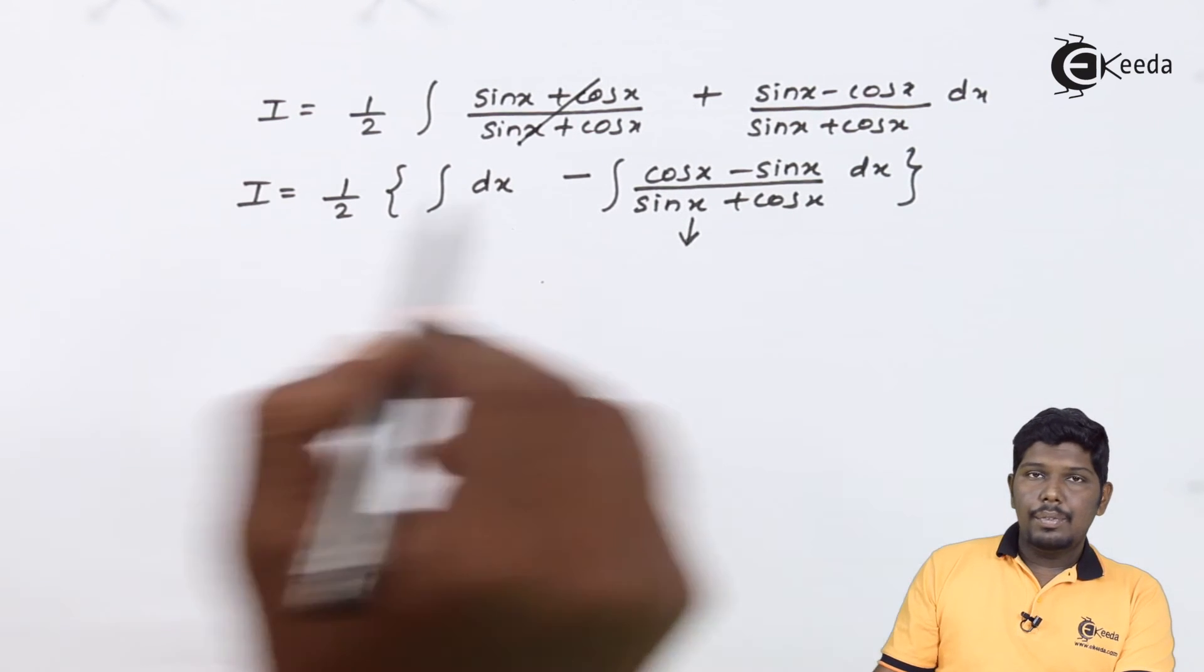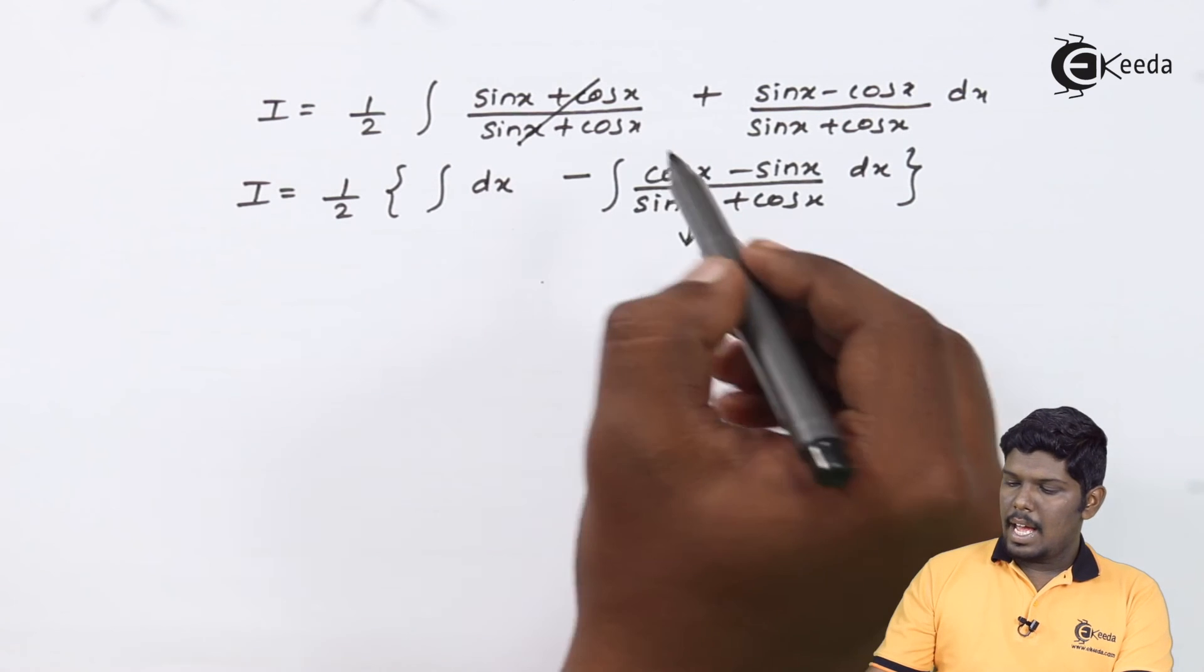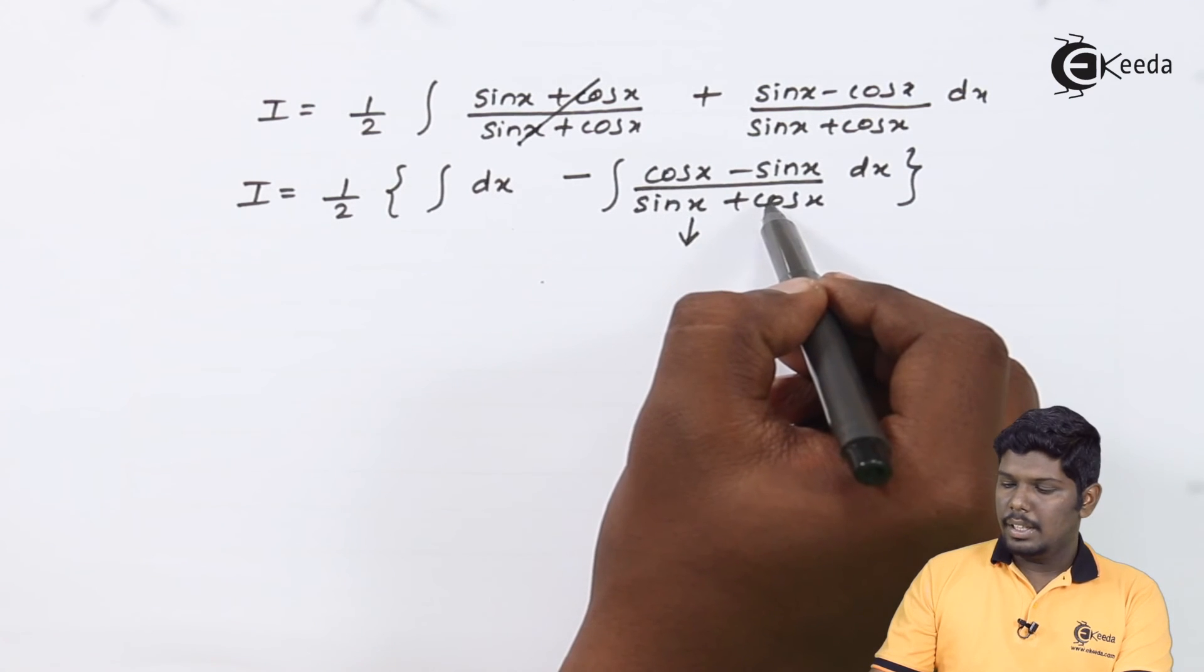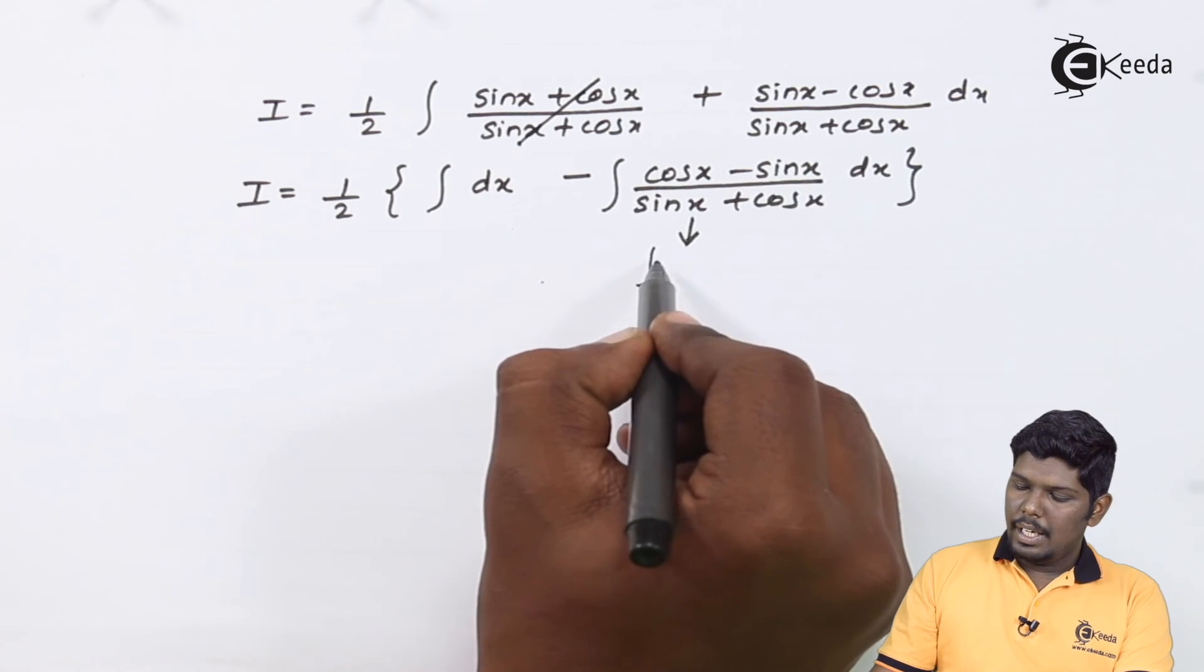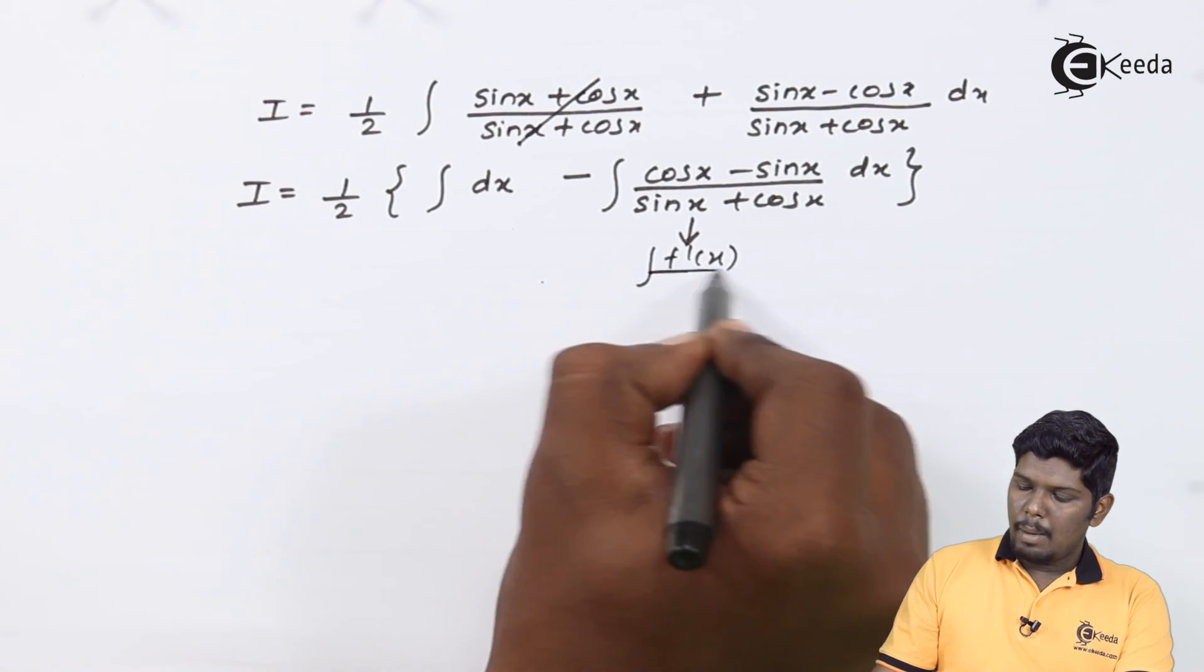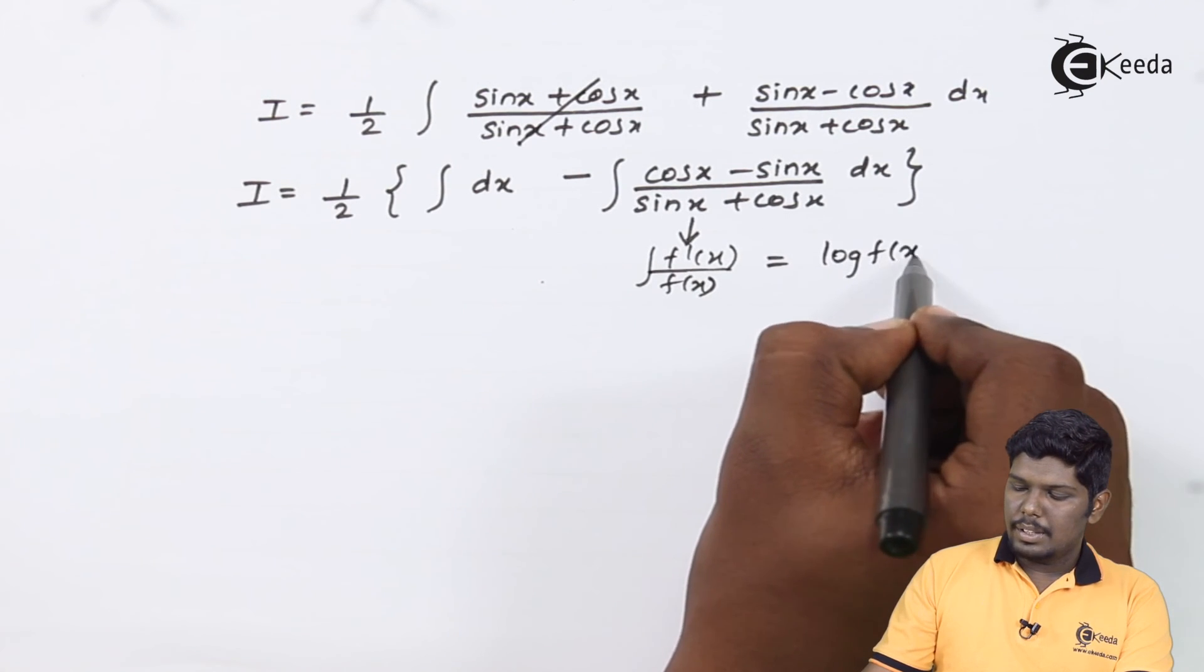If you can see, this function is in the form of integral f dash x upon f of x, as the derivative of sin x plus cos x will be cos x minus sin x. This can be compared with integral f dash x upon f of x, that we already know is equal to log of f of x.